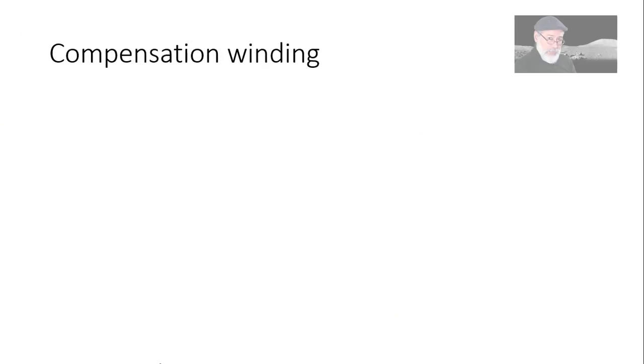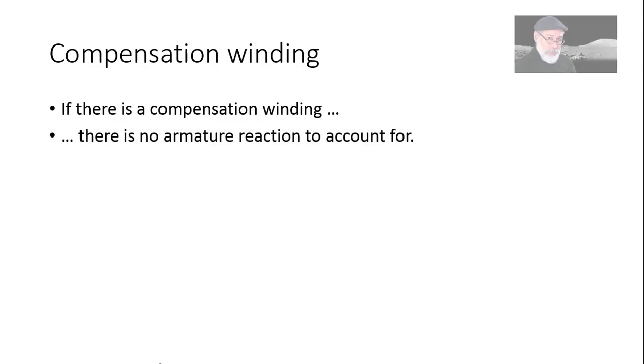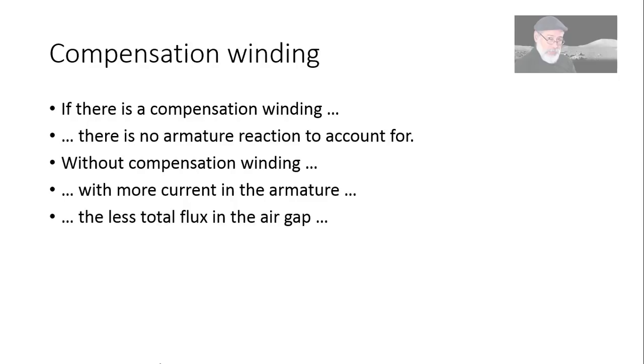How does compensation windings change what we need to worry about in examinations? If there is a compensation winding, there is no armature reaction to account for. That's a blessing. But when there is no compensation winding, when the current in the armature increases, the flux decreases in the air gap. And with less flux, we have more velocity. As the armature current grows the velocity of the machine grows as well.